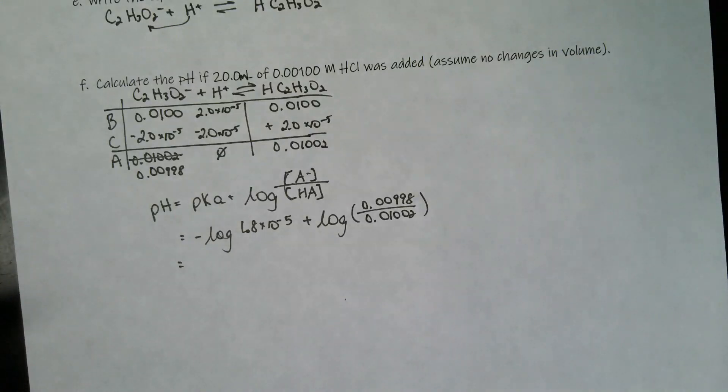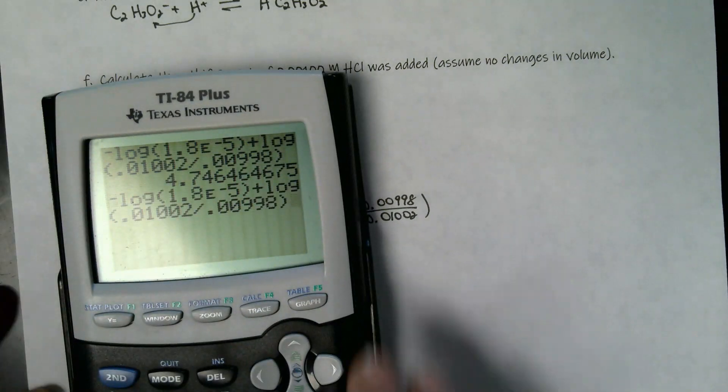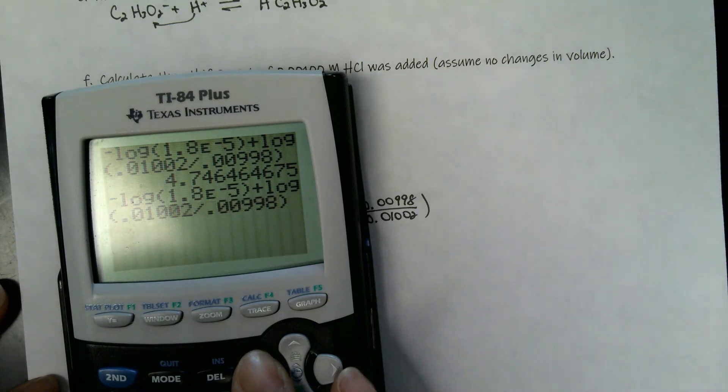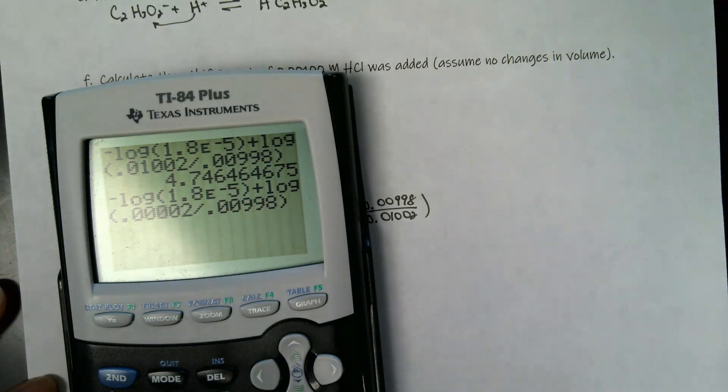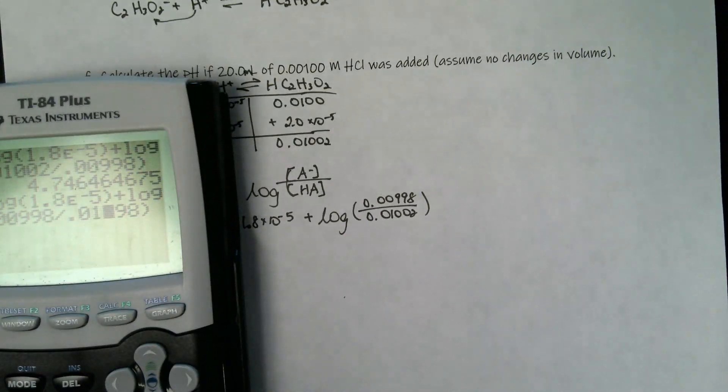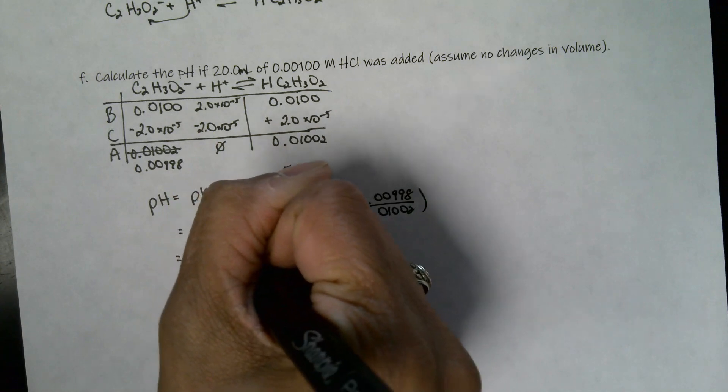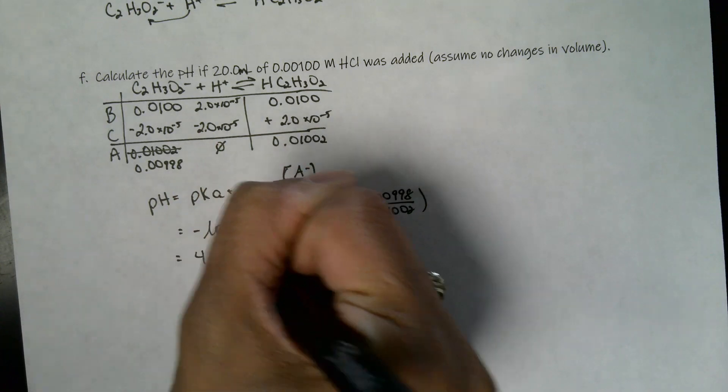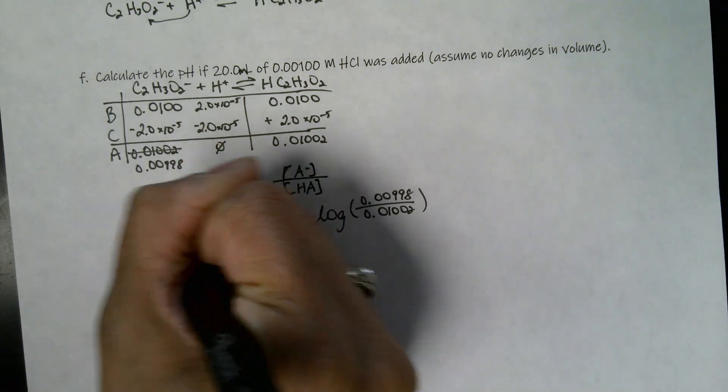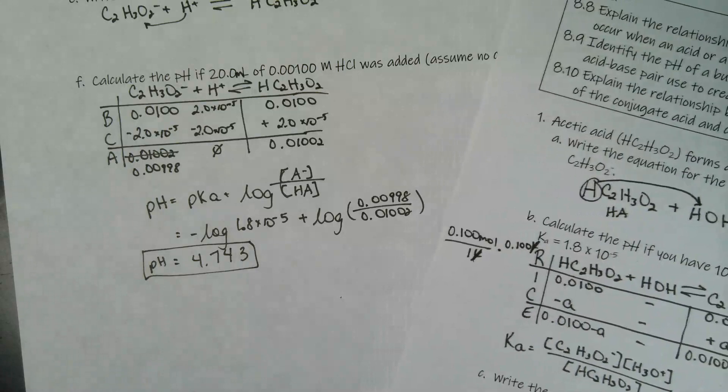Same thing with our Henderson-Hasselbalch equation. pH is equal to pKa plus the log of the concentration of your conjugate base over the concentration of your acid. My pKa, I don't have that. I have the Ka, and I'm just going to put that in here. The negative log of the 1.8 times 10 to the negative fifth, which was my Ka, plus the log of my A minus is 0.00998 over 0.01002. So we'll throw this into our calculator. So we have 4.743 for our pH when we add just a teeny tiny bit of acid. And granted, it's a tiny amount. But even with a larger amount, you can see that it will become more acidic.